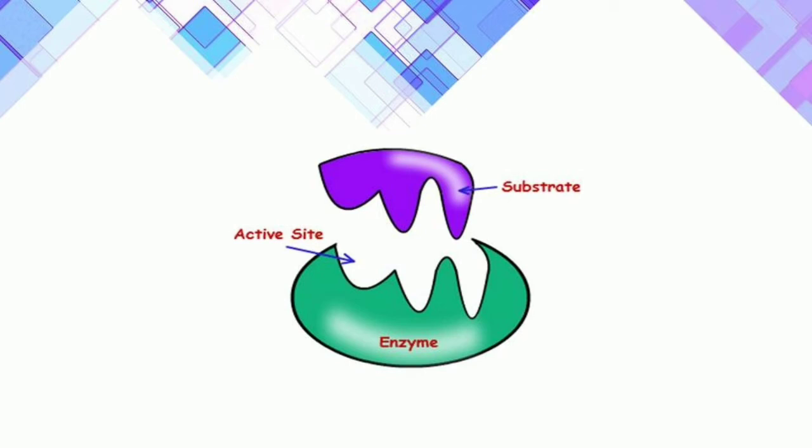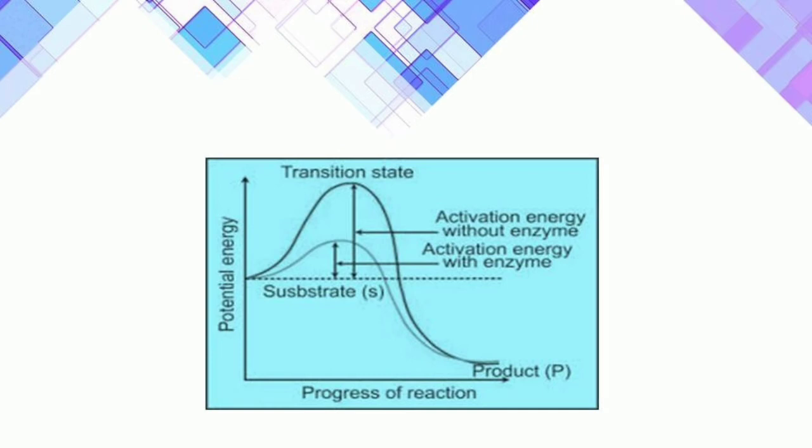After bond breaking or making is completed, the substrate gets transformed into the structure of products. The pathway of this transformation must go through a state called the transition state structure. We can represent this pictorially by a graph where the y-axis represents potential energy and the x-axis represents the progression of structural transformation.